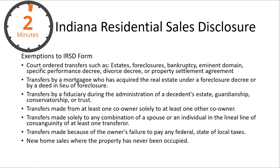If there is an estate, then there is no disclosure. If there's a transfer between co-owners like business partners, there's no disclosure. If there's a transfer to an individual in what's called consanguinity — which is the line of descent — this is the one most people are familiar with because it's between husband and wife when they get divorced. There's also no transfer form if the house is taken through a tax sale.